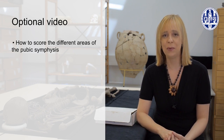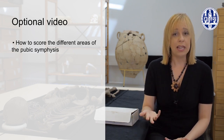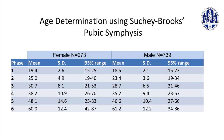Based upon the stage that best describes the appearance of the pubic symphysis you are analyzing, you can use the provided chart to get a mean age, the standard deviation, and the 95% confidence interval. Again, note that some of the ranges are quite large.